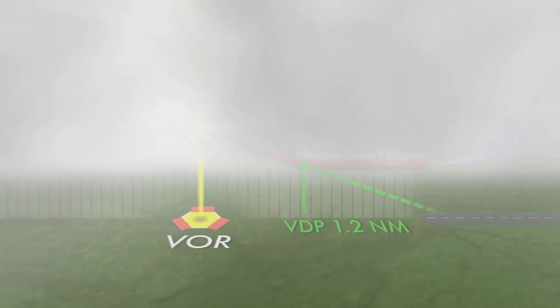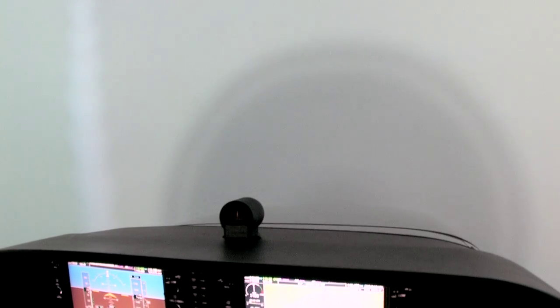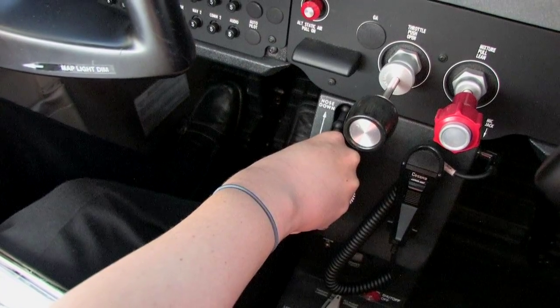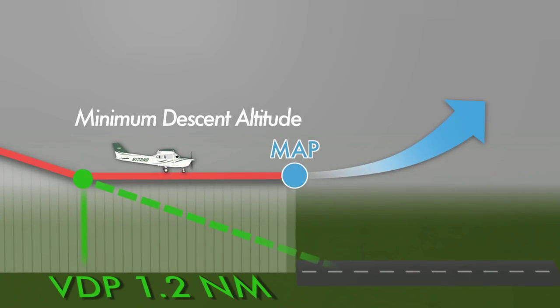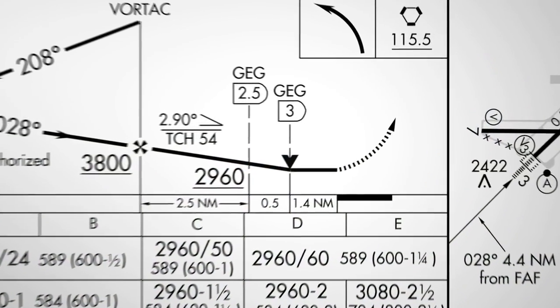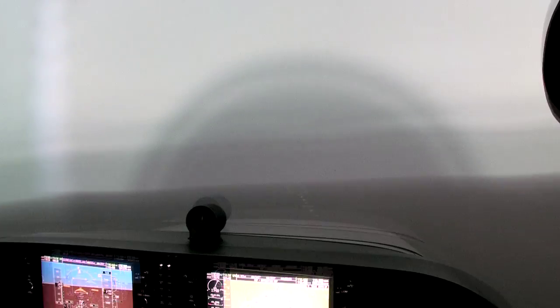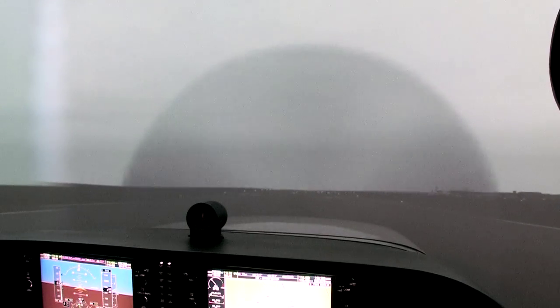As the aircraft approaches the minimum descent altitude, or MDA, the pilot must begin to transition from a descent to level flight. It will be necessary to adjust the throttle and elevator trim to maintain a constant altitude and airspeed. The pilot, now flying at the MDA, should reference the charted visual descent point if one exists. The VDP is a point from which a pilot can make a stabilized 3-degree glide path approach from the MDA to a landing.